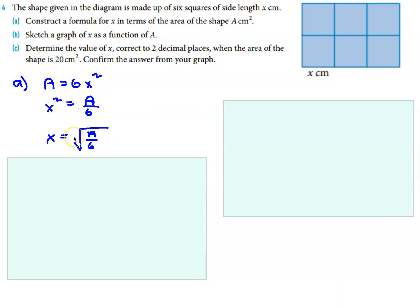And now we just have to make x the subject. So divide both sides by 6 and take the square root, and x equals square root of A over 6. Notice that we don't have a negative answer there, and that's because you can't have negative lengths and you can't have negative areas.